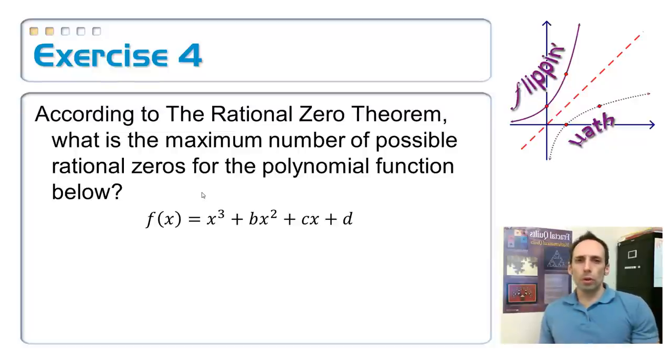So, a couple of more little tiny exercises to wrap this thing up. According to the rational zero theorem, what's the maximum number of possible rational zeros that you would have to test for this polynomial function? Well, I hope that you have picked up from this so far that I can only have 3 possible answers. So, 3 zeros.